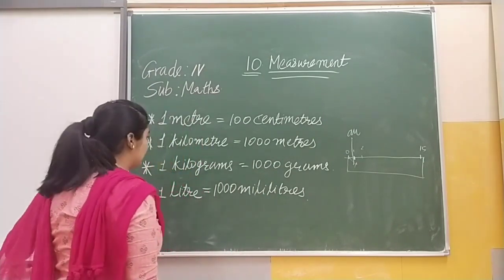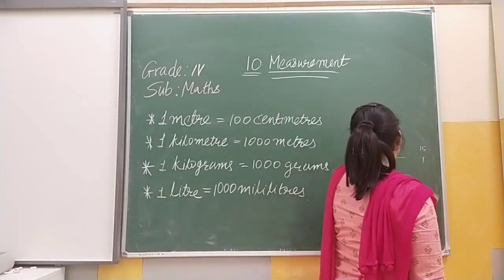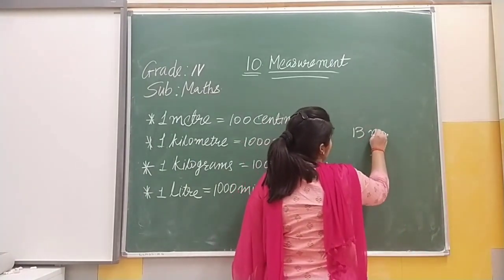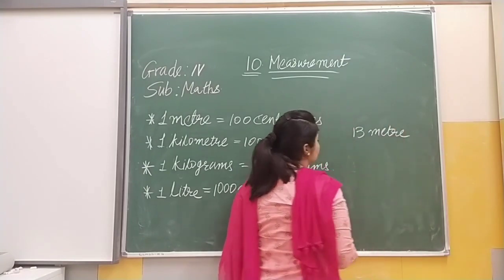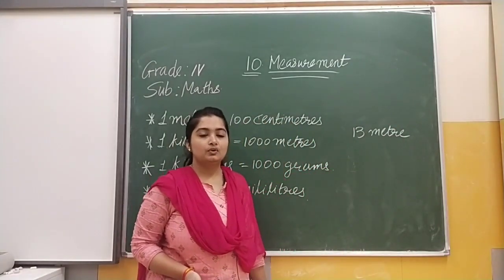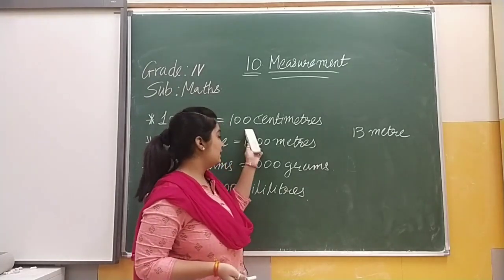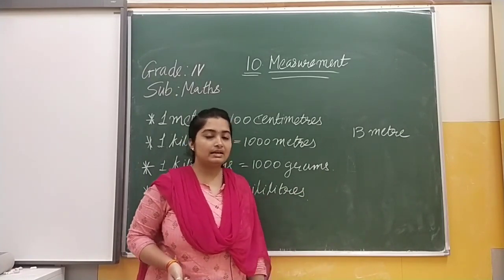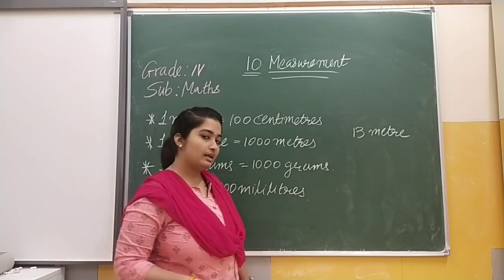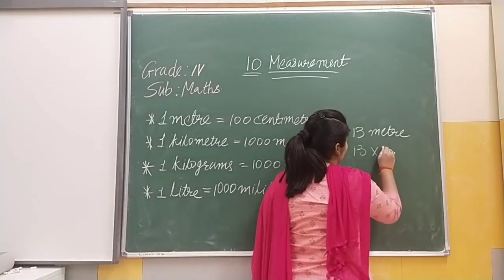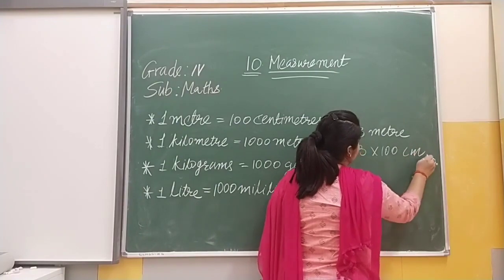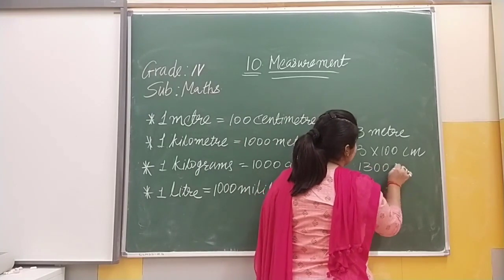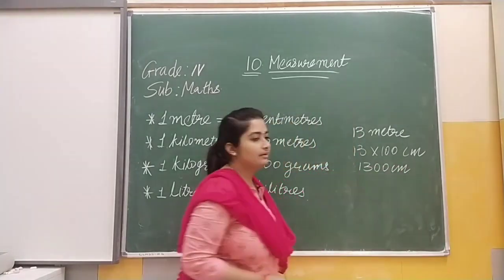For example, suppose you are given 13 meters and you have to convert it into centimeters. That is very simple — since 1 meter = 100 centimeters, just multiply 13 by 100. That will convert it into centimeters. The answer will be 1300 centimeters.